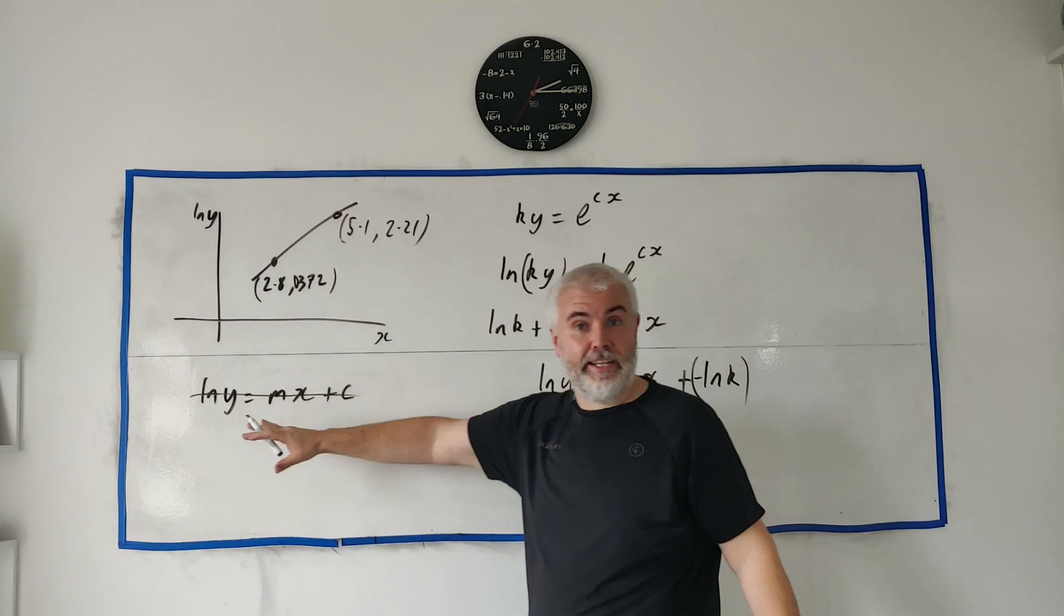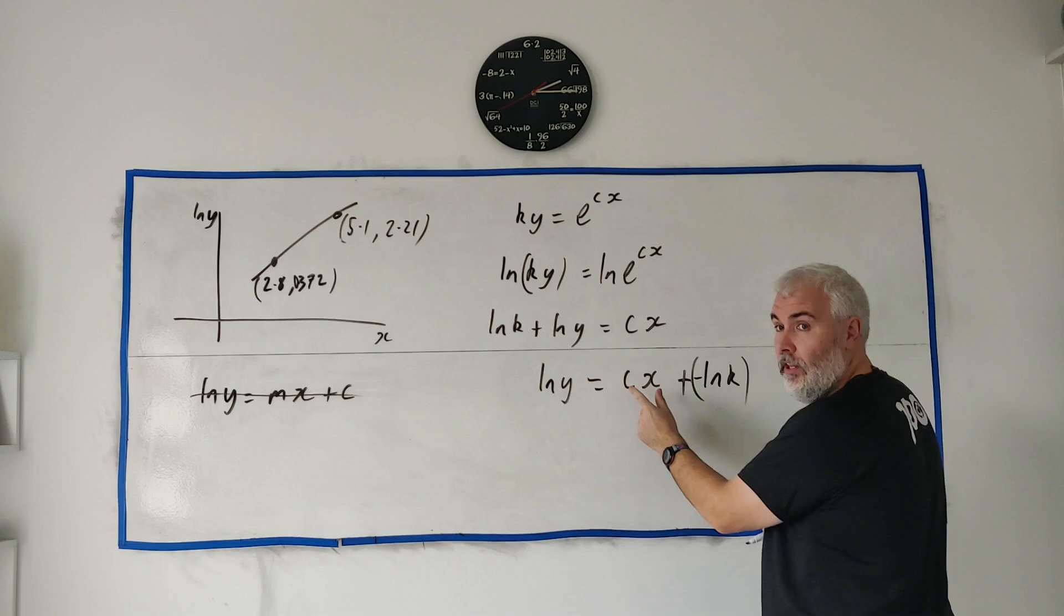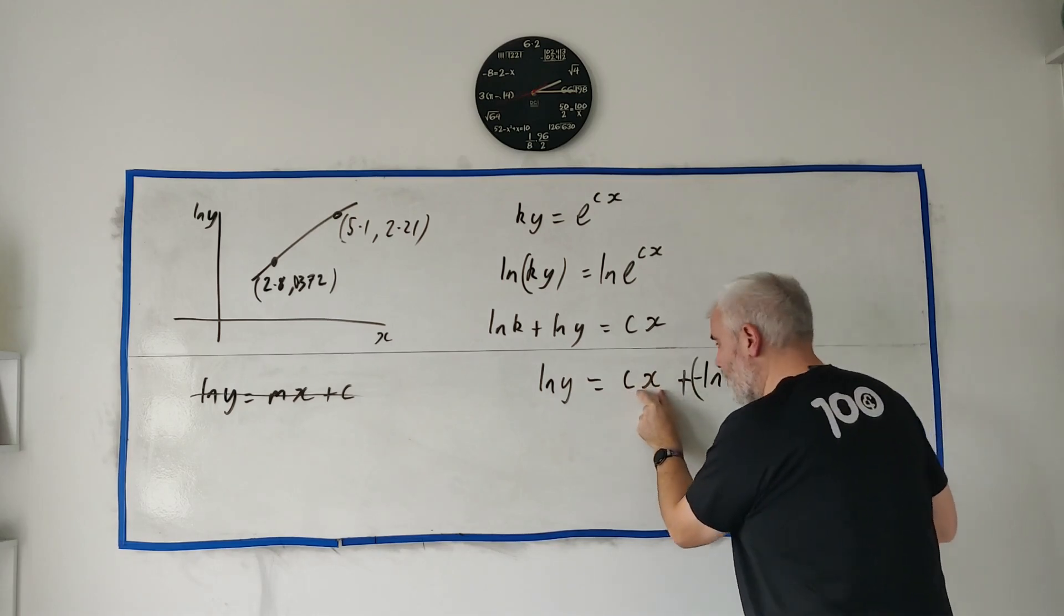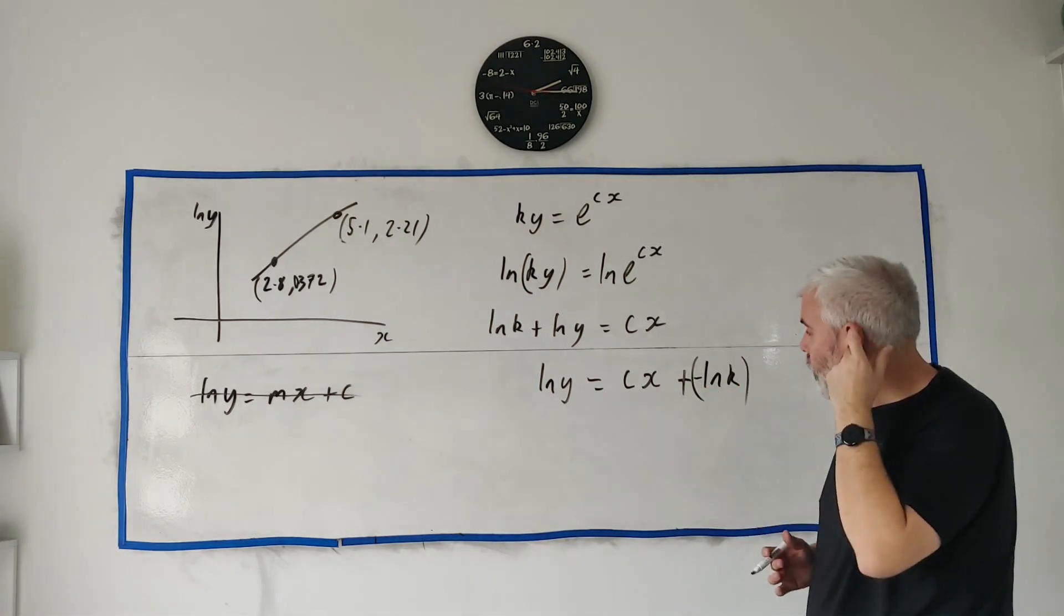So it is how we expect the line to look: the y-axis is equal to something, a constant, times the x-axis plus a constant. They told us k is a constant, so the natural log of k must be a constant.